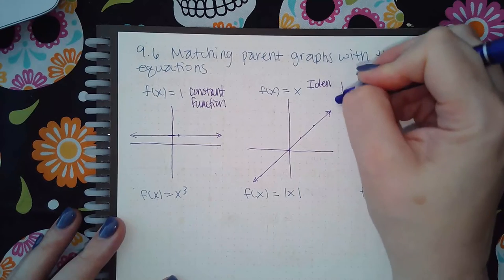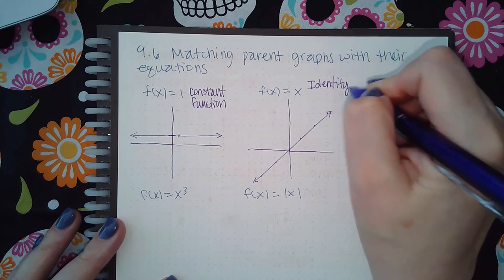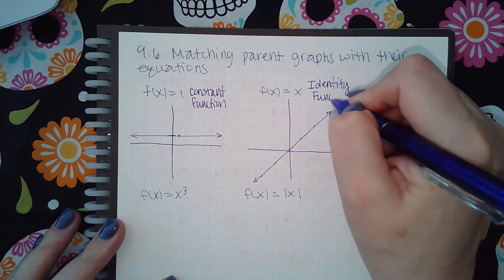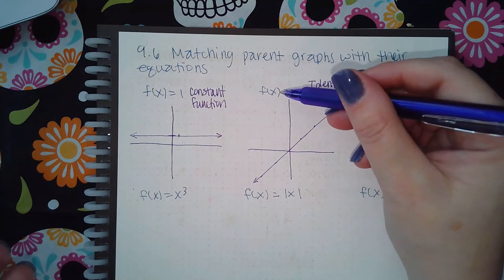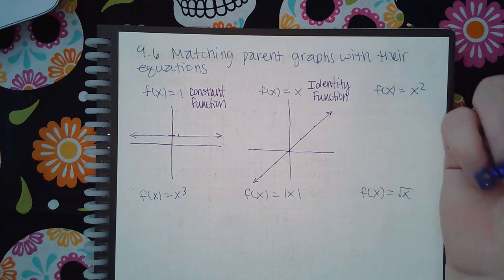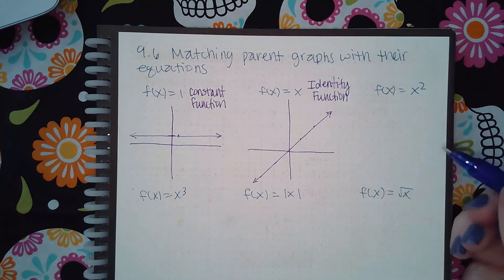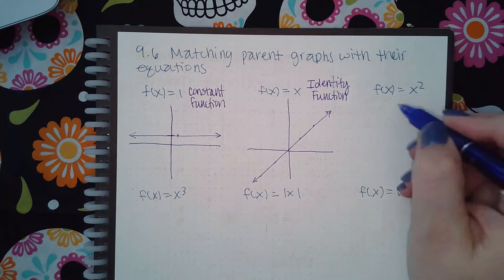This one is called the identity function. And why is it called that? Because your x values will equal your y values, since the y value equals x, right? So they're the same.